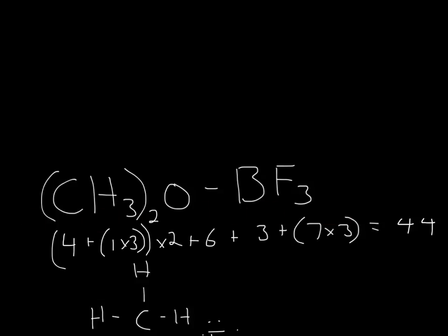So, for this molecule, all I did was write out the valence electrons for each one of these. For example, carbons 4, hydrogens 1, 1 times 3, and then times 2 because all of it is in parentheses.